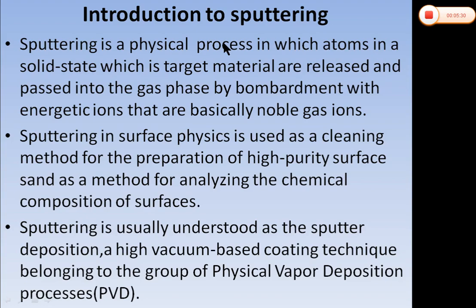Introduction to sputtering: Sputtering is a physical process in which atoms in a solid state — our target material — are released and passed into the gas phase by bombardment with energetic ions, which are basically noble gas ions. Usually this gas is argon, though other gases can be used. Sputtering in surface physics is used as a cleaning method for preparing high-purity surfaces and as a method for analyzing the chemical composition of surfaces. Sputtering is usually understood as sputter deposition, a high vacuum-based coating technique belonging to the group of physical vapor deposition (PVD).